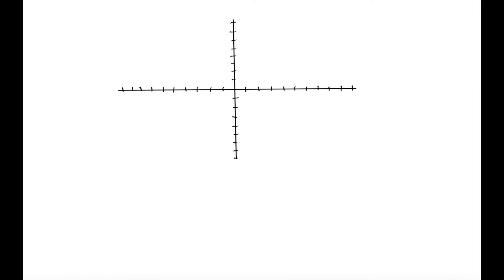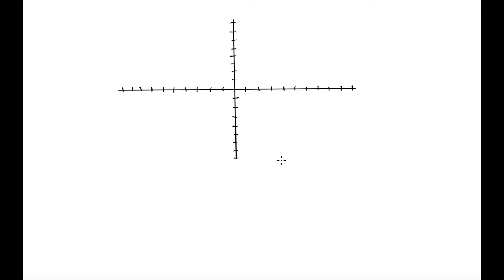We've spent quite a bit of time discussing all of the different shapes that you need to be familiar with in grade 10 geometry. In this lesson, we are going to be talking about a way that we need to represent those shapes — that is to draw those shapes on a Cartesian plane. The first thing I want to go over is the idea of different points being represented in the Cartesian plane, and those points are going to represent the vertices of our shapes.